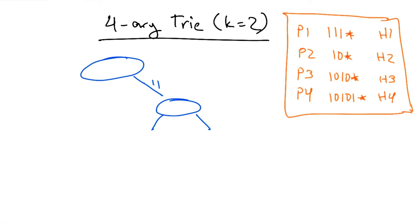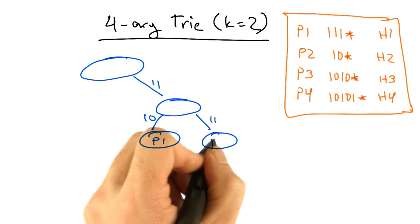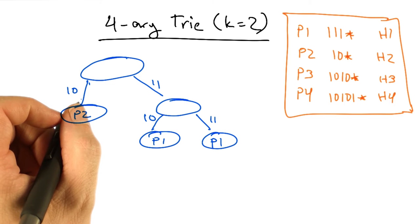So if we take 1, 1, and now we take 1 star, that's 1, 0 and 1, 1. Now we basically have to put p1 in two places in the tree. 1, 0 star results in just one entry.